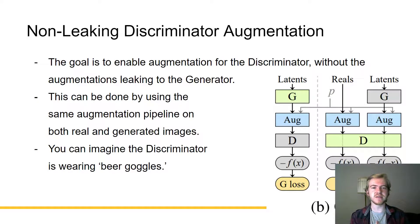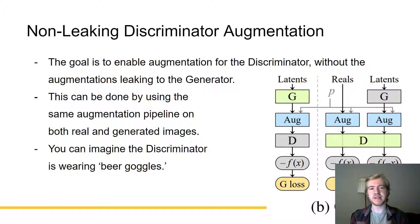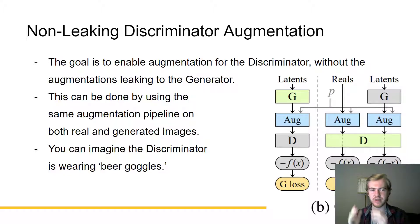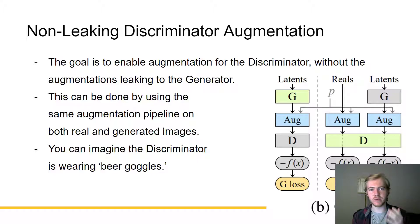The goal is to get non-leaking discriminator augmentation — to enable augmentation for the discriminator so you can have a massively expanded dataset without the augmentations leaking to the generator. This can be done using the same augmentation pipeline on both real and generated images. You can imagine the discriminator is wearing beer goggles, and since it's wearing the same beer goggles for both the real and generated datasets, the generator should be able to invert the effects and create normal-looking real images. The benefit is that augmentations have not leaked into the generator.